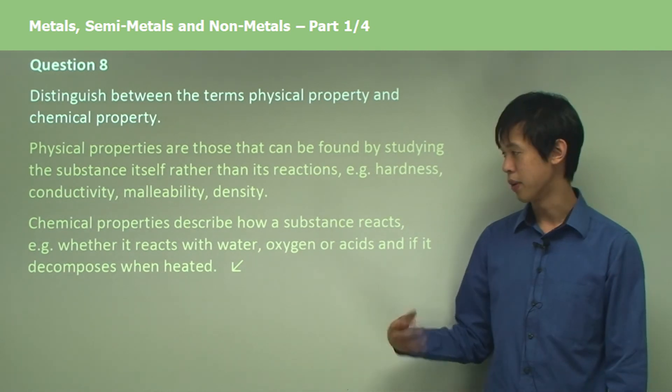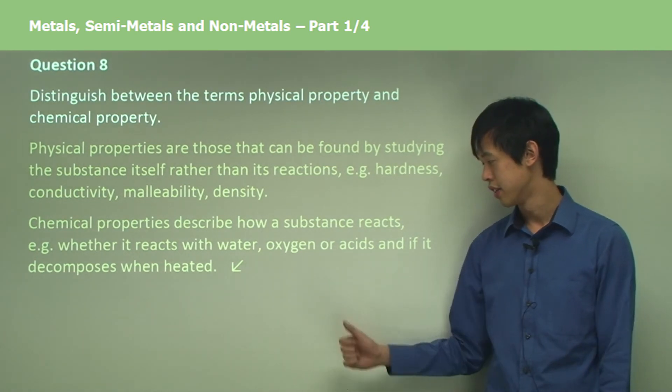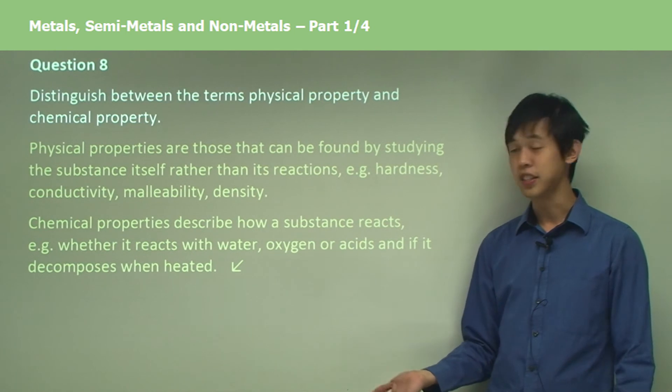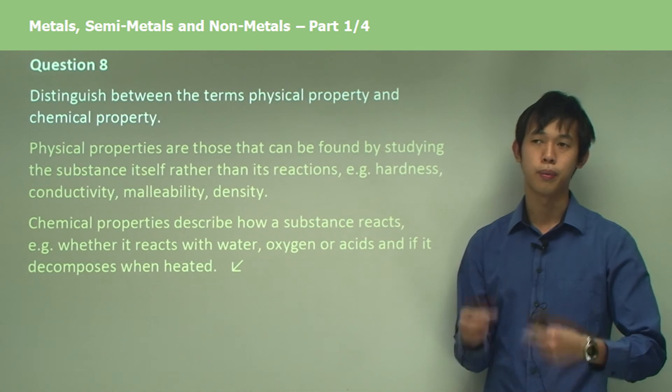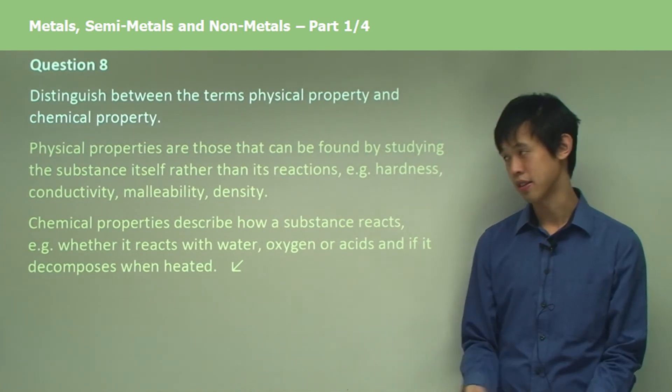Chemical properties describe how a substance reacts—whether it reacts with water, oxygen, acids, and if it decomposes when heated. Those kinds of things. We're looking at how it reacts, not what it is as a substance. That's the difference.